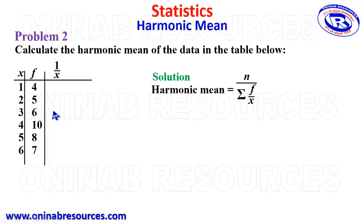The reciprocal of 1 is 1, that is 1 over 1 is 1. Reciprocal of 2 is 1 over 2, giving us 0.5. Reciprocal of 3 is 1 over 3, giving us 0.33 to 2 decimal places. Reciprocal of 4 is 1 over 4, giving us 0.25. Reciprocal of 5 is 1 over 5, giving us 0.2. Reciprocal of 6 is 1 over 6, giving us 0.17 to 2 decimal places.